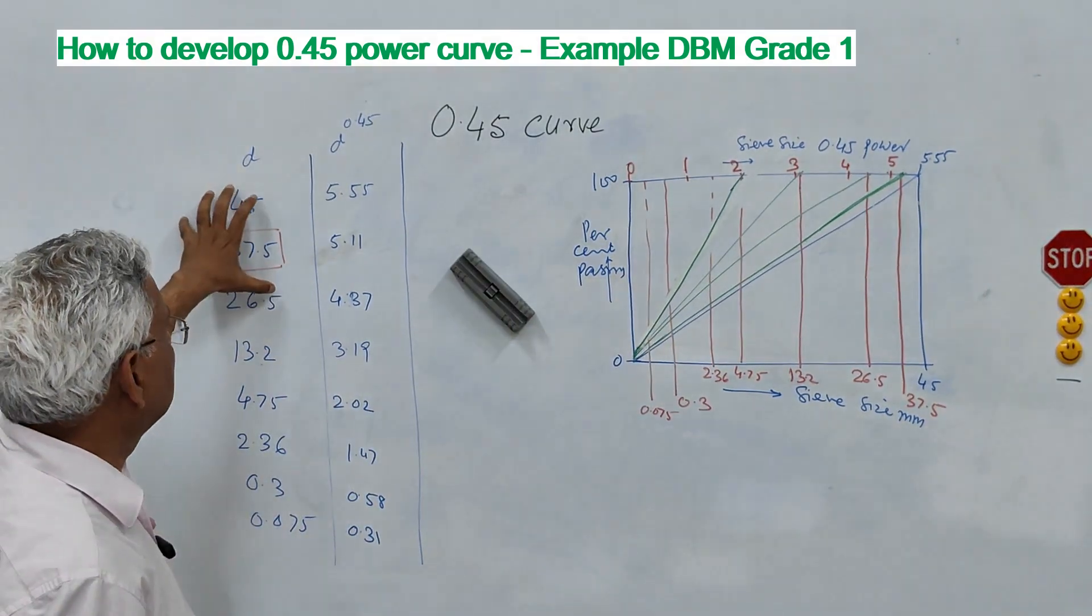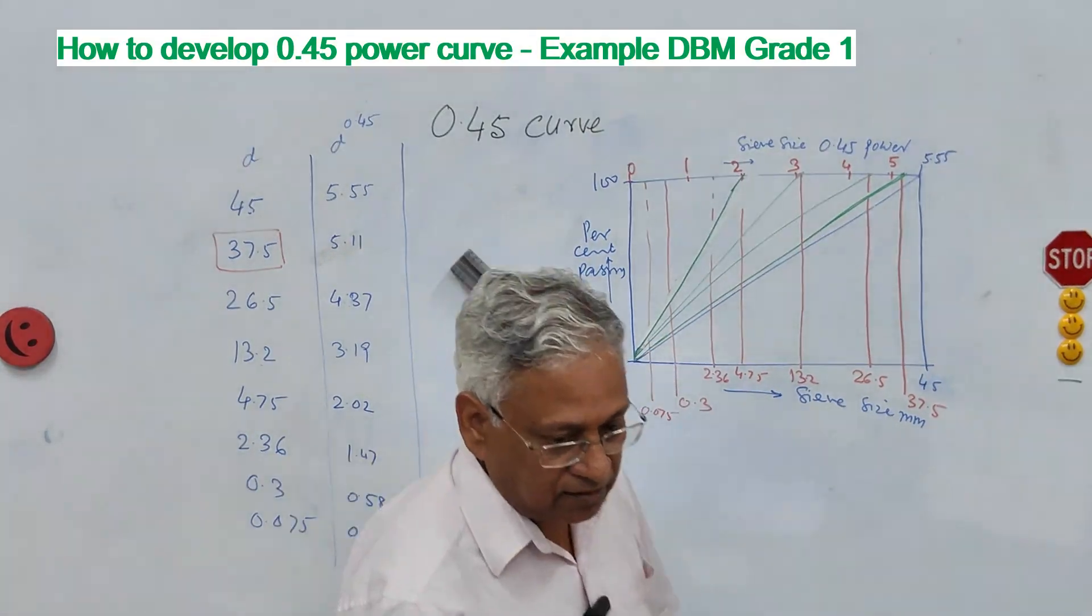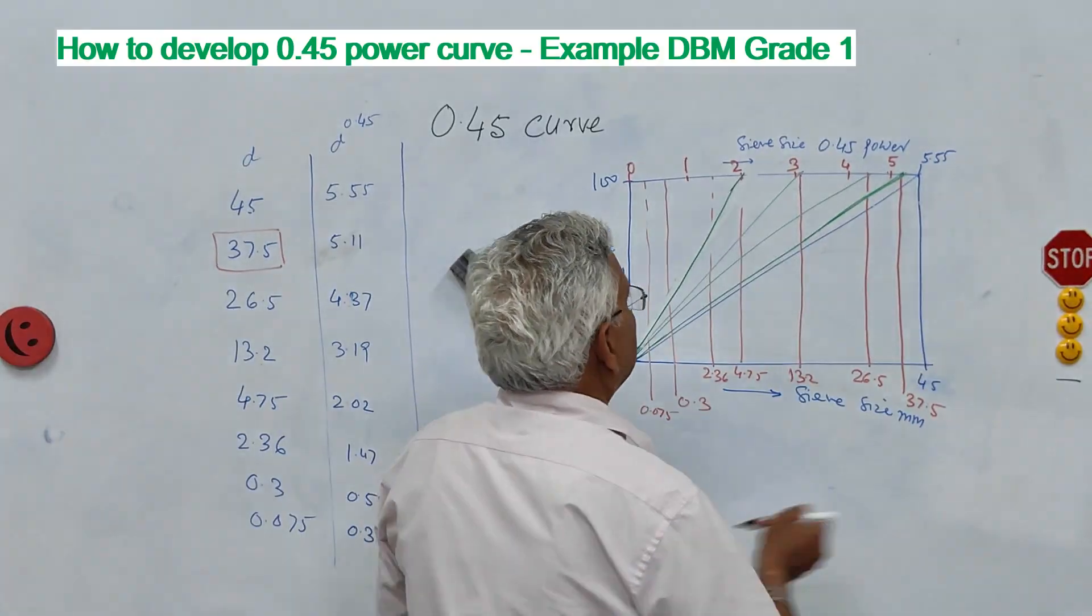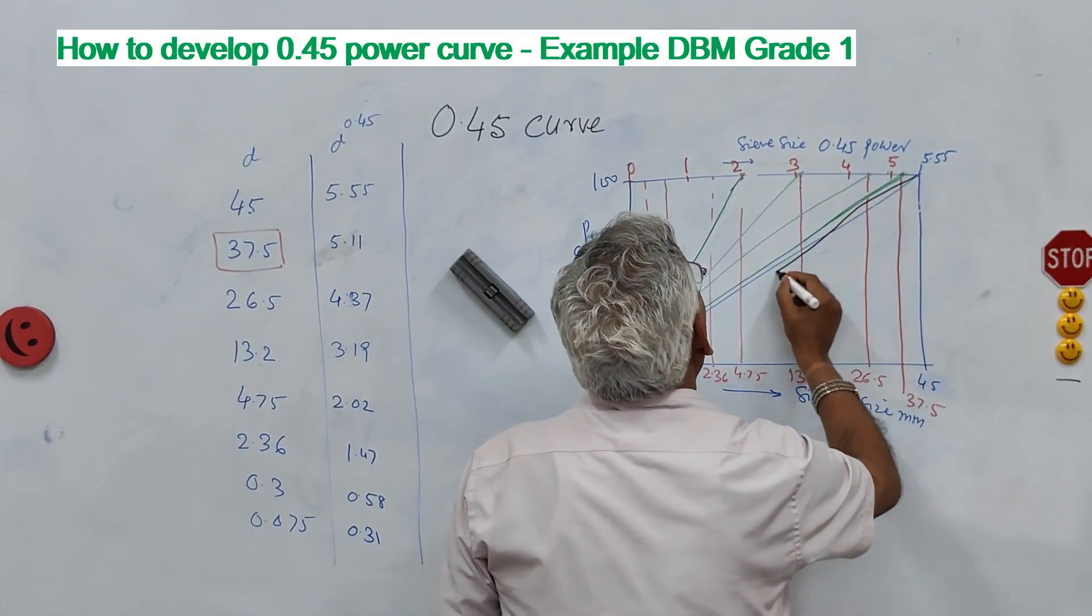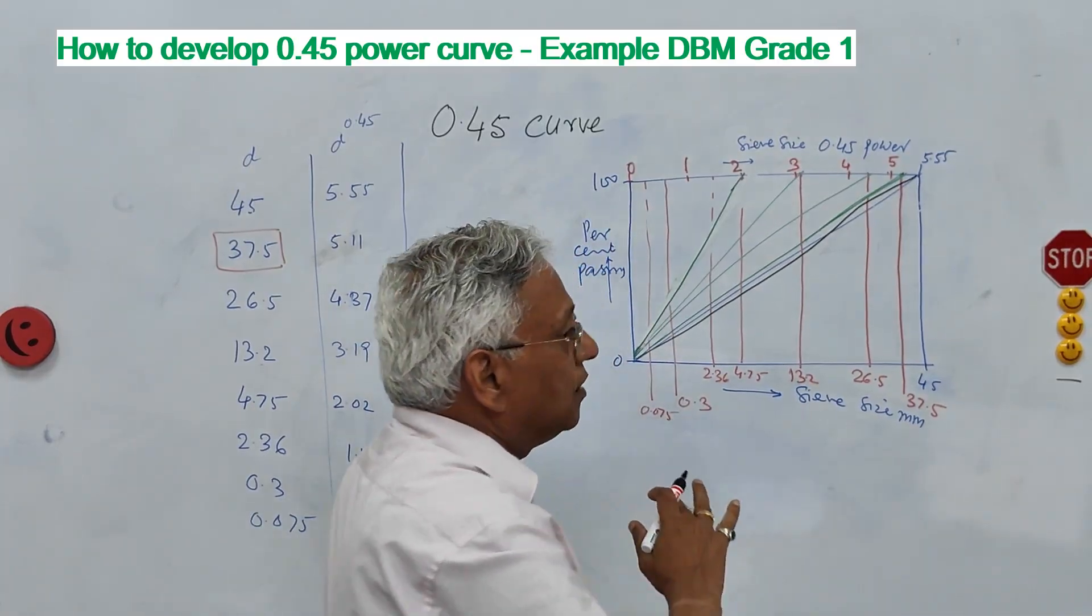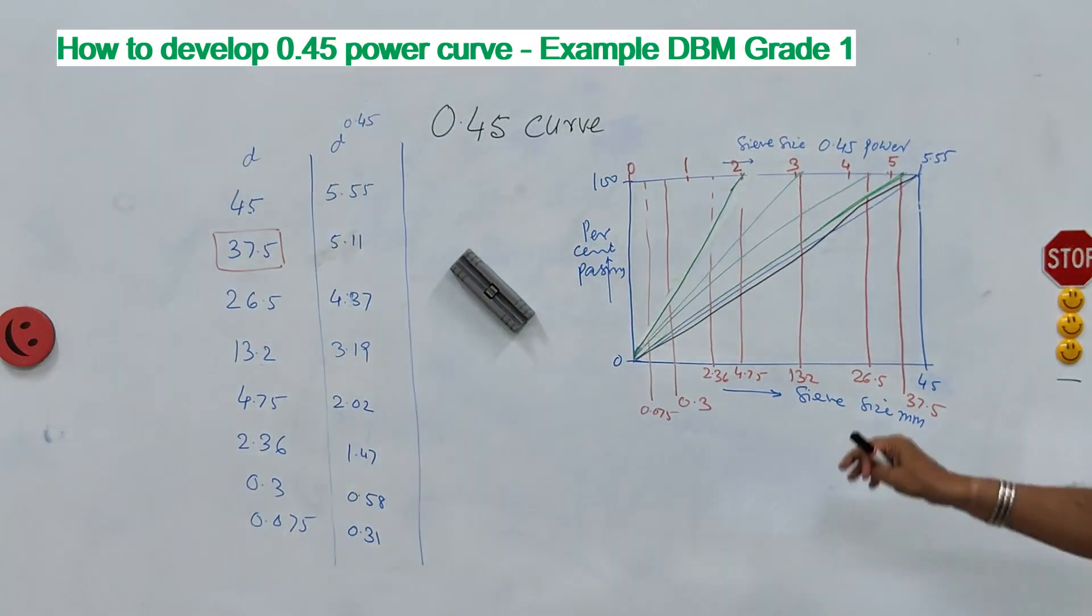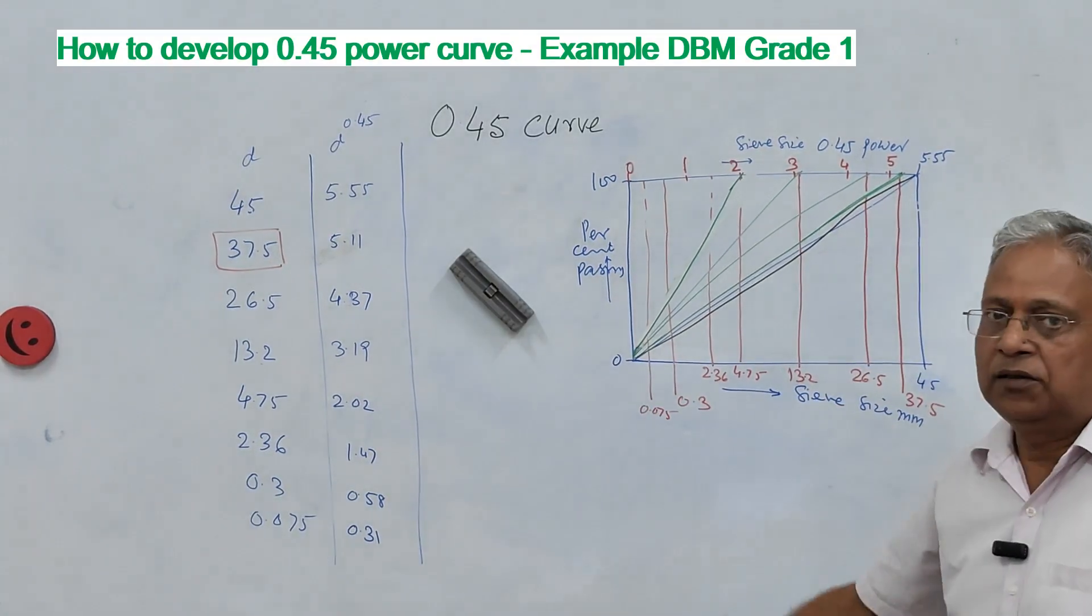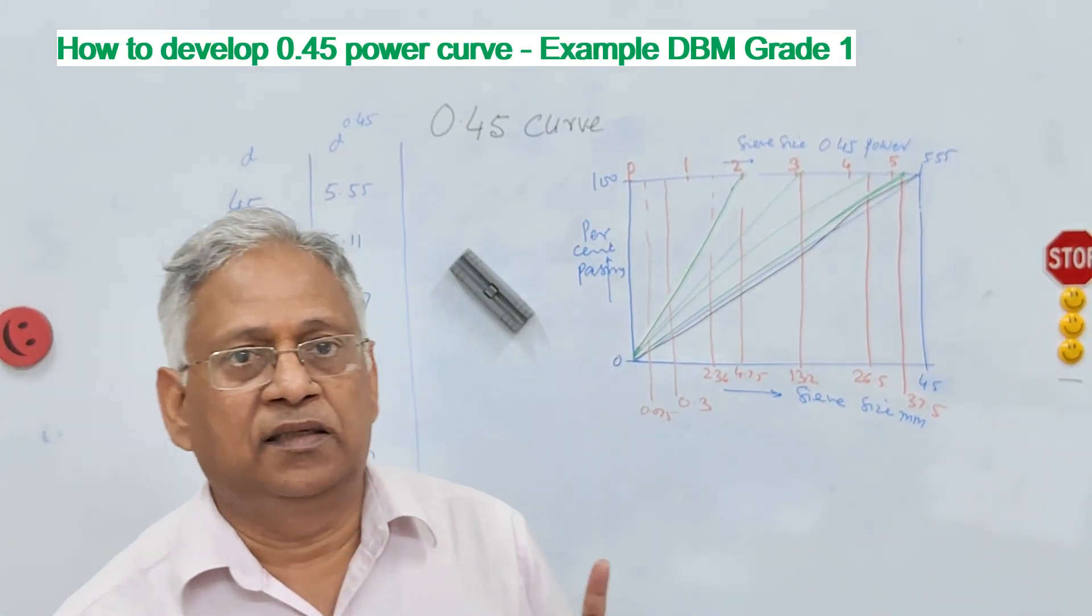So if you are working on let us say in the same gradation DBM1 this is the grading. So your actual grading should fall something like this, maybe you have a grading like this. It should be almost parallel to the grading, it can cut this line but the upper portion, lower portion should be as far as possible parallel to this. Particularly middle portion of the grading should be parallel to maximum density line.